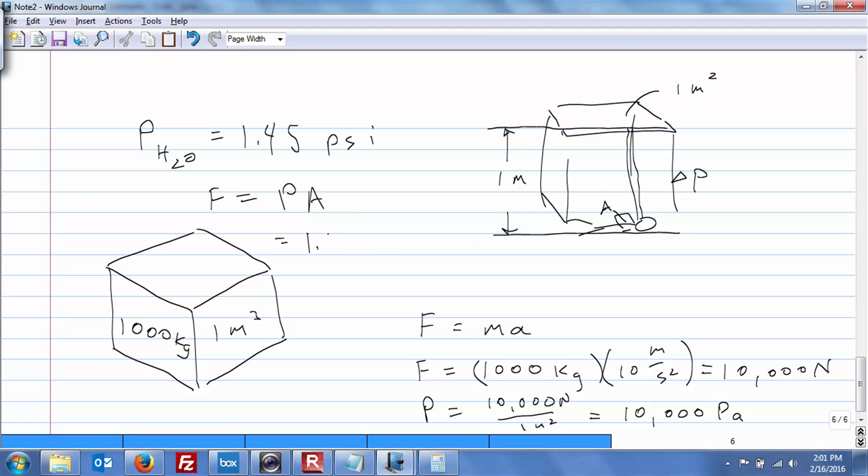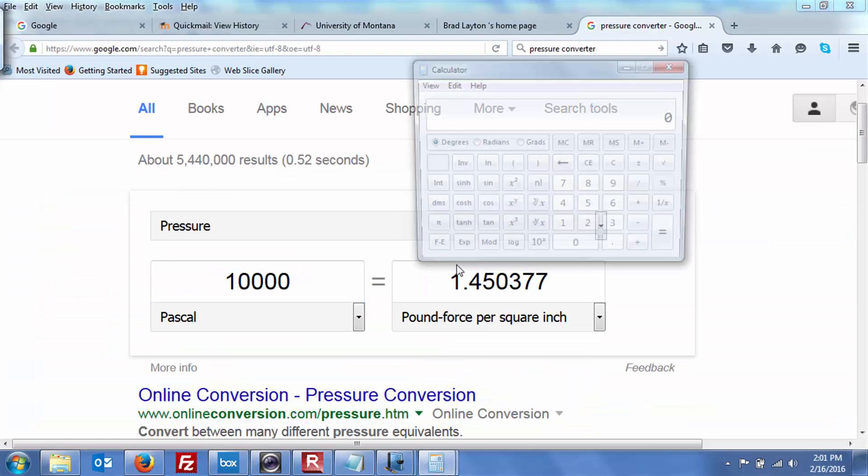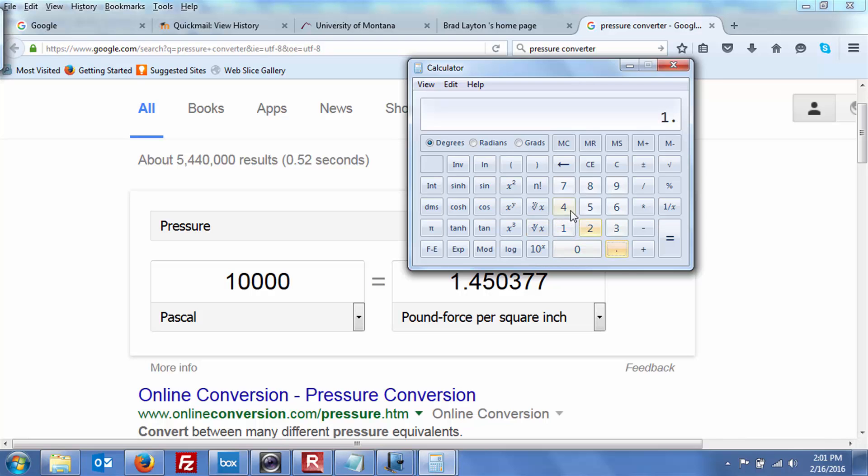So 1.45 PSI, that's square inches. So we'll do 14 inches times 14 inches. That'll work. 1.45 times 14 times 14 equals 284. So that's like having a football linebacker sitting on your chest while you're trying to breathe. That's why you can't breathe when you're three feet in water.